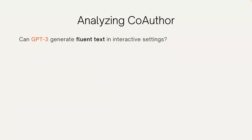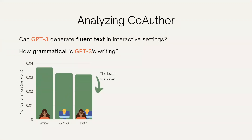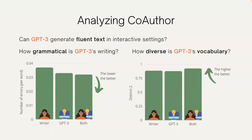We will share part of the observations from our initial analysis; for more analysis and details, please read our paper. Our first analysis studied whether GPT-3 can generate fluent text in interactive settings. For grammaticality, we observed that text written by both the writer and GPT-3 has fewer spelling and grammatical errors compared to text written by the writer alone or GPT-3 alone. For the diversity of vocabulary, we also observed that the text written by both the writer and GPT-3 has the most diverse vocabulary, which may imply that using suggestions from GPT-3 helps writers expand their vocabulary.